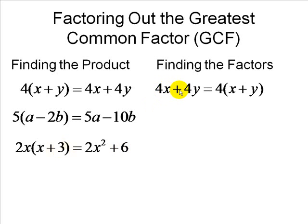Here we have 4x plus 4y. We note that 4 is a common factor between them, the greatest common factor. So we factor out the 4, and what's left here is x plus y. So here we went from two factors to a product, and now we're going from a product to two factors. 4 is a factor, and x plus y is a factor.